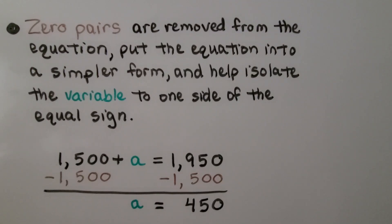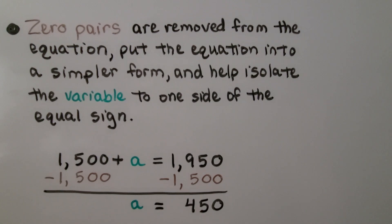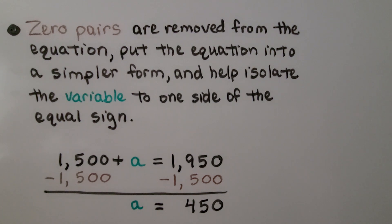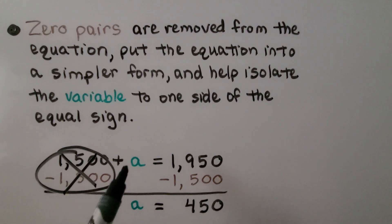Zero pairs are removed from the equation, put the equation into a simpler form, and help isolate the variable to one side of the equal sign. If we have 1,500 plus a is equal to 1,950, we can take 1,500 away from each side to create a zero pair. We get rid of it, it's gone, now we only have a on this side, it's isolated to one side. We take away the 1,500 from this side, and we get 450. We know a is equal to 450.